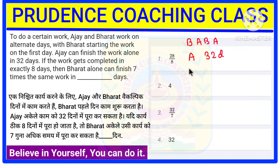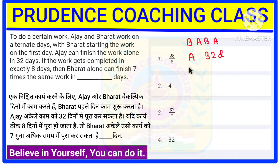If the work gets completed in exactly 8 days, Varath alone can finish 7 times the work in 10 days. So here, as you can see, the total work is completed in 8 days. That means 8 divided by 2 equals 4 days — Varath is coming for 4 days and Ajay is coming for 4 days.